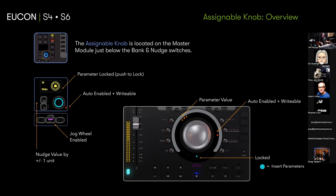The assignable knob is located on the master module, just below the bank nudge switches. You'll see information about the parameter, the automation state, the color coding, whether it's locked, and whether it's being mirrored to the jog wheel. The jog wheel LEDs change depending on values — whether it's a send level or an EQ bandwidth — and also shows the function type and automation state.